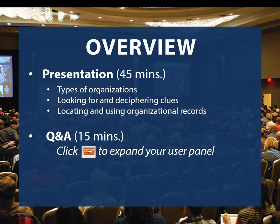In the next 45 minutes or so, Rhonda will go over some of the different types of fraternal organizations that exist, how to identify what organization your ancestor may have belonged to, how to locate that society's records, and what information they might contain. We won't be able to go through every fraternal organization, so we'll try to keep our research tips and strategies pretty general. Please feel free to type a question in the panel to the right of your screen, and Rhonda will answer as many as she can in the last 10 to 15 minutes. This event is being recorded so you can go back, pause, fast-forward, or rewind the presentation.